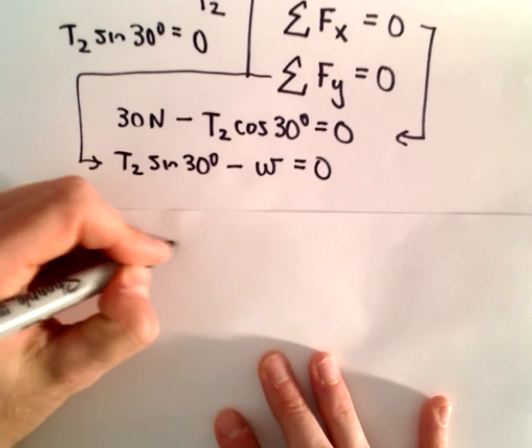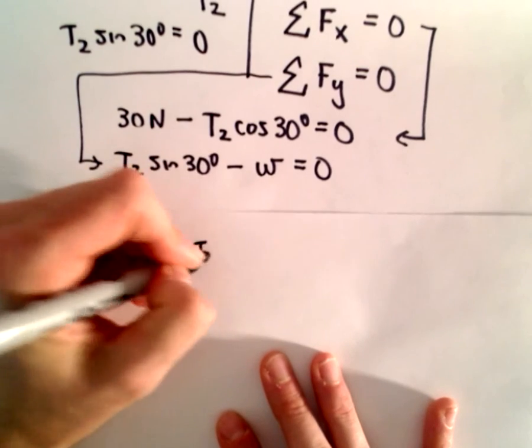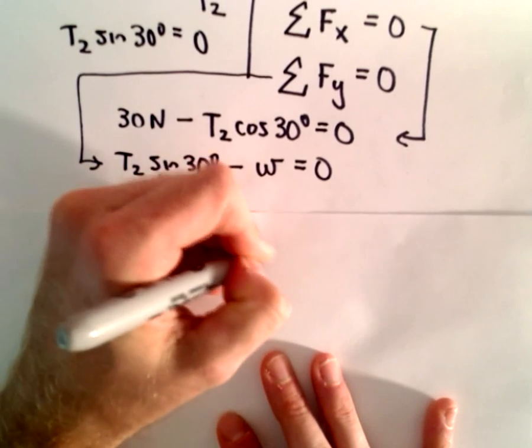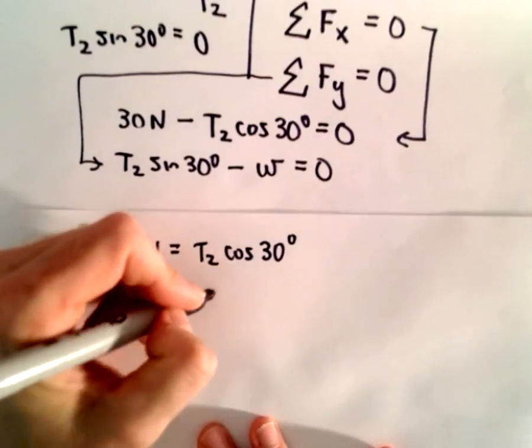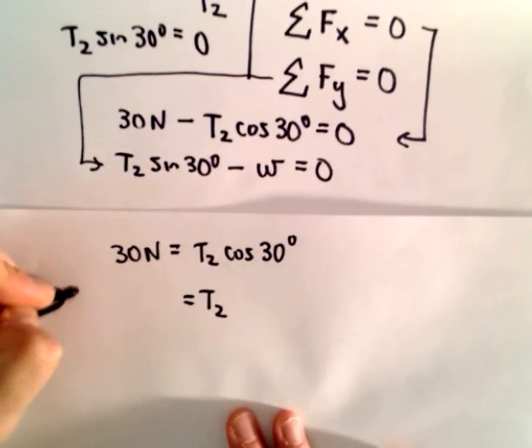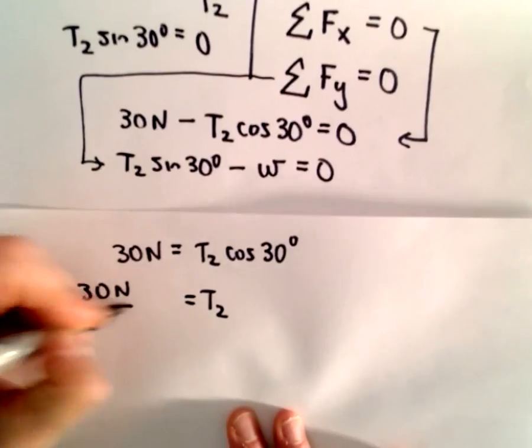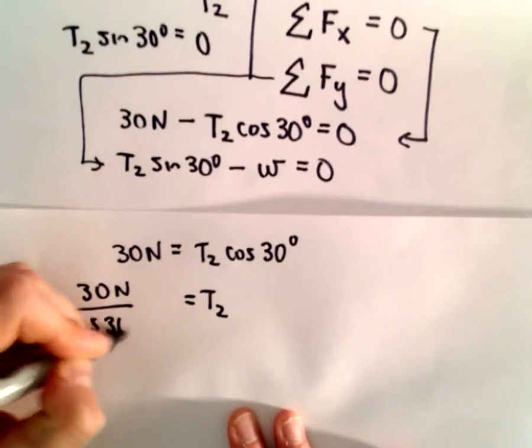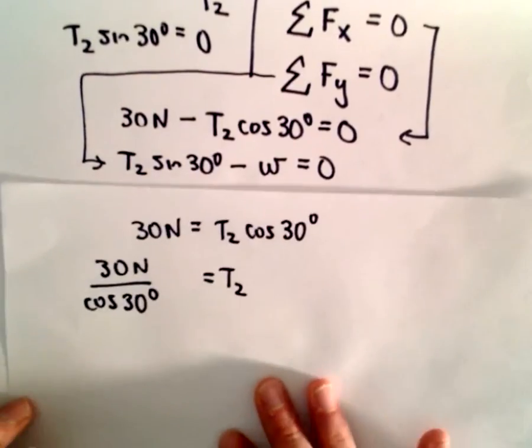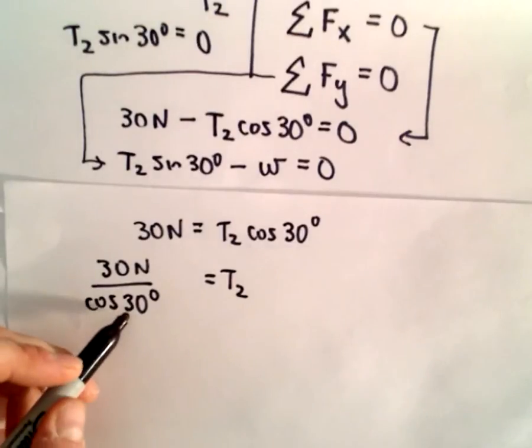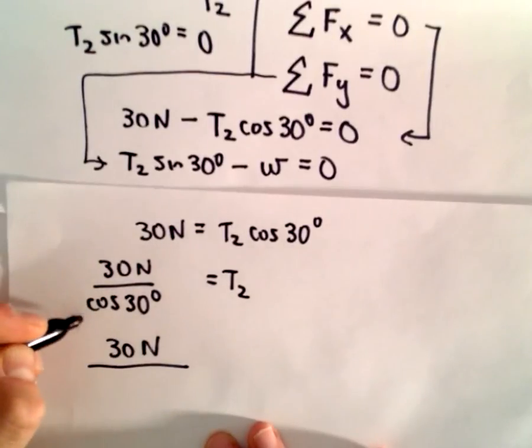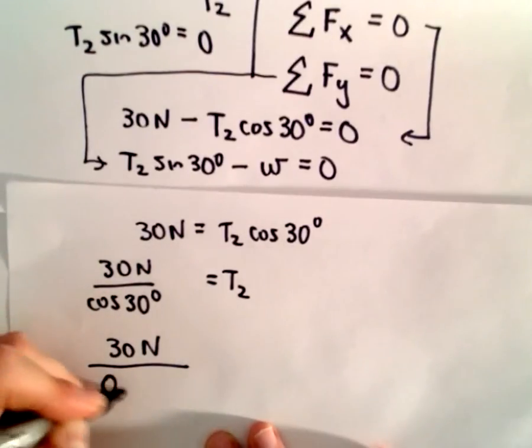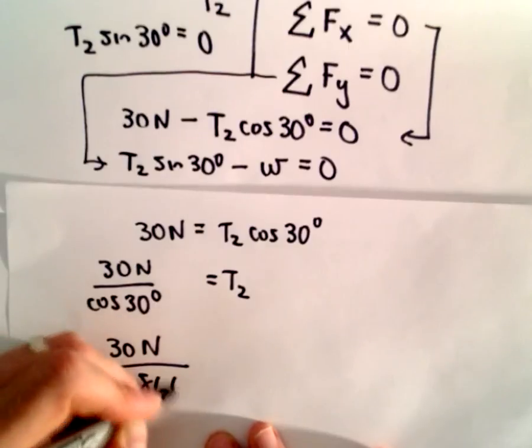So, we have 30 newtons. I'm just going to add T2 times cosine of 30 degrees to both sides. And now, to get T2, we can just divide both sides by cosine of 30 degrees. And, you know, cosine of 30 degrees, 30 degrees is pi over 6. That's one you can get exactly. I'm even just going to go ahead and round it off. Cosine of 30 degrees is roughly 0.866.